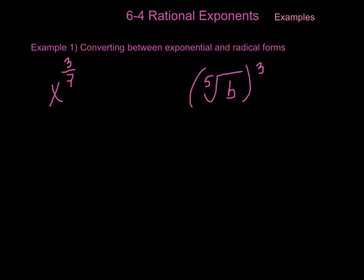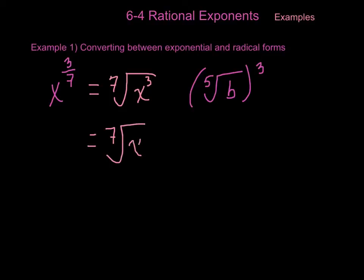Let's do some examples so that this makes more sense. In this first example, we're going to convert between exponential and radical forms. Here we have x to the 3 over 7th power. How can we write that as a radical? The x is what's going to be underneath your root, the denominator becomes the index, and the numerator is the power on what's underneath your radical. Another way you can write this is with the same index — your radicand will still be x, but the 3 will instead raise the entire radical to a new power. Either answer will be acceptable.